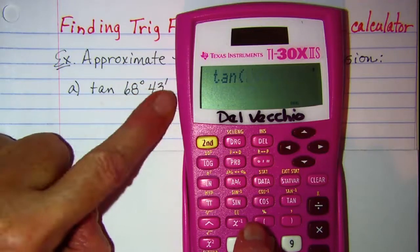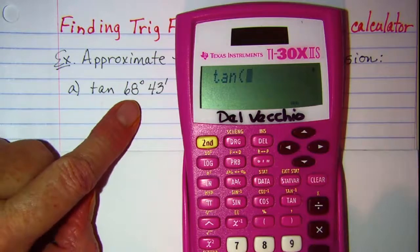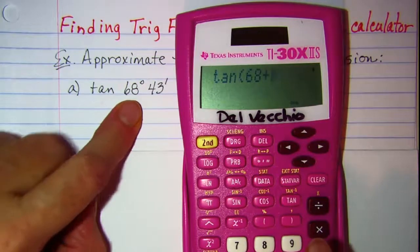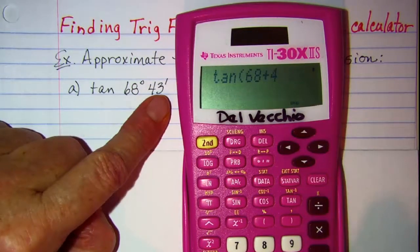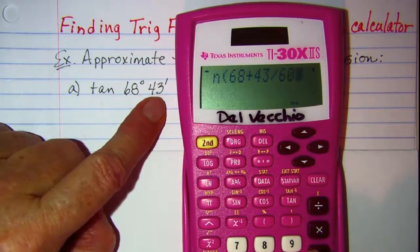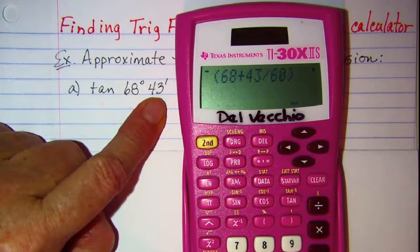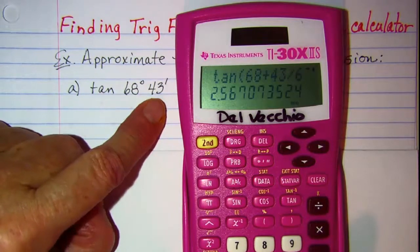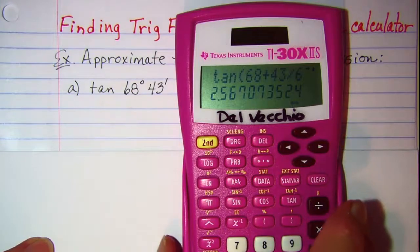because we have some arithmetic that needs to be done here. We have our 68, and then we'd have to add 43 divided by 60 to take care of the 43 minutes. And then close the argument, and we get 2.56707.